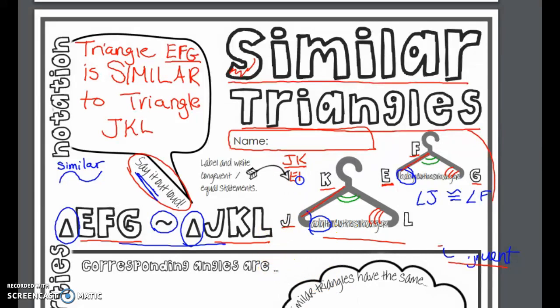So I'm going to write the ratio of JK to EF equals the ratio of KL to FG equals the ratio of JL to EG. All of those ratios would be the same, the exact same. I'm going to pause the video so I can scroll up.